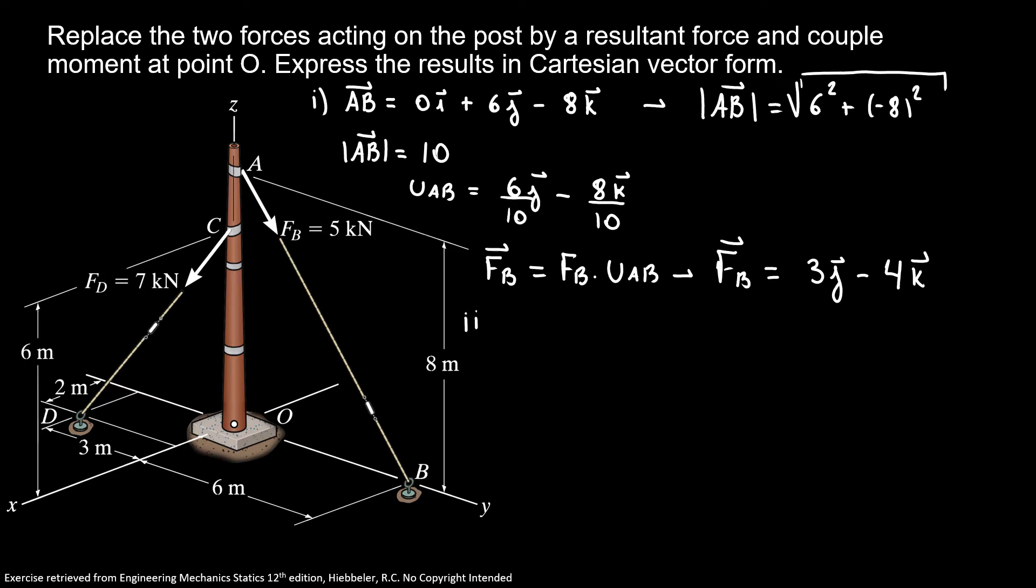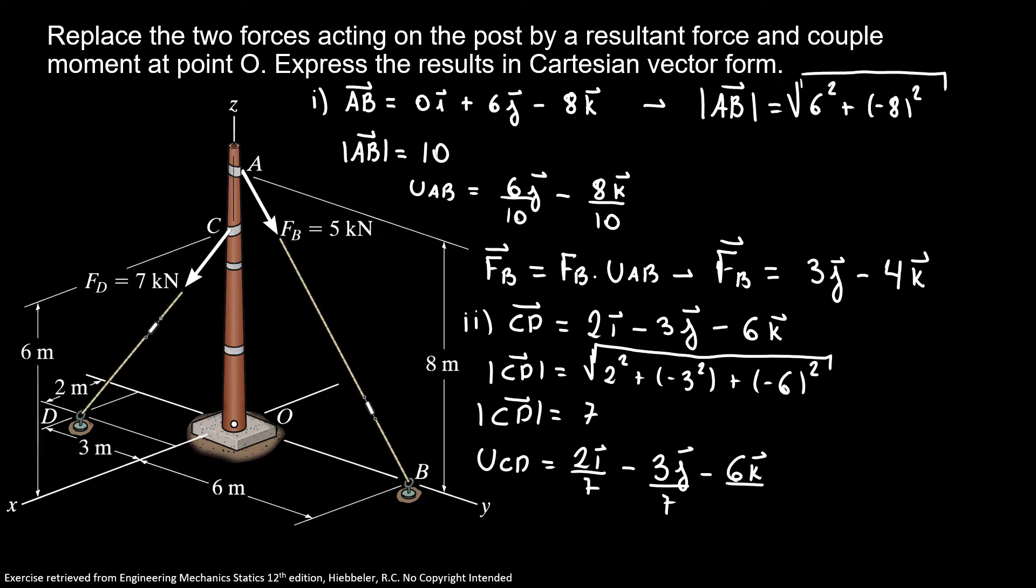Now we're going to find our vector CD. My vector CD is 2i minus 3j minus 6k. Now I'm going to find the magnitude of my vector CD. The magnitude of the vector CD is equal the square root of 2 squared plus minus 3 squared plus minus 6 squared. So the magnitude of my vector CD equals 7.